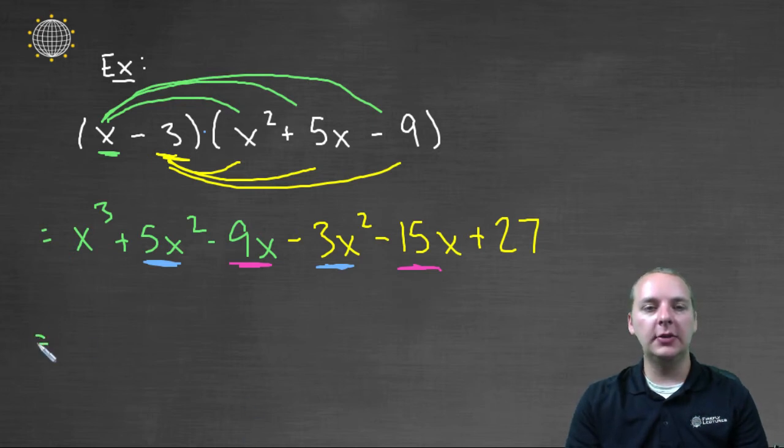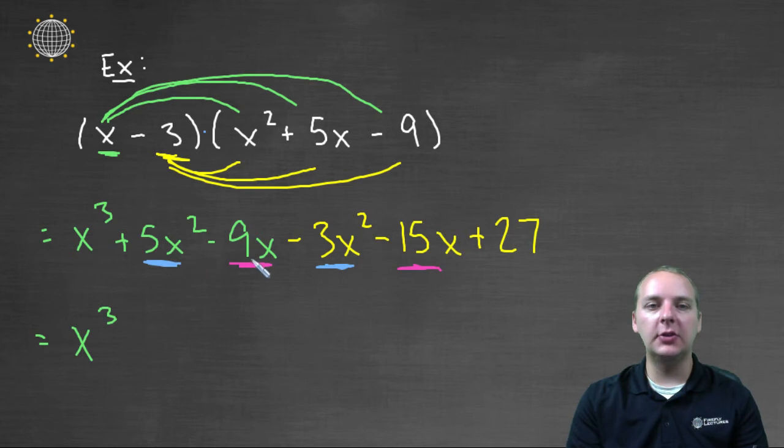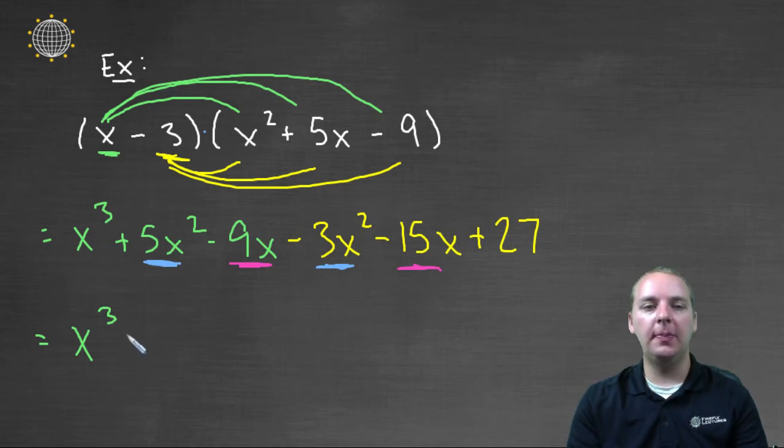So here we go, final answer. There's only one x cubed. So we'll put x to the third. Minus five x, I'm sorry, plus five x squared minus three x squared would make plus two x squared.